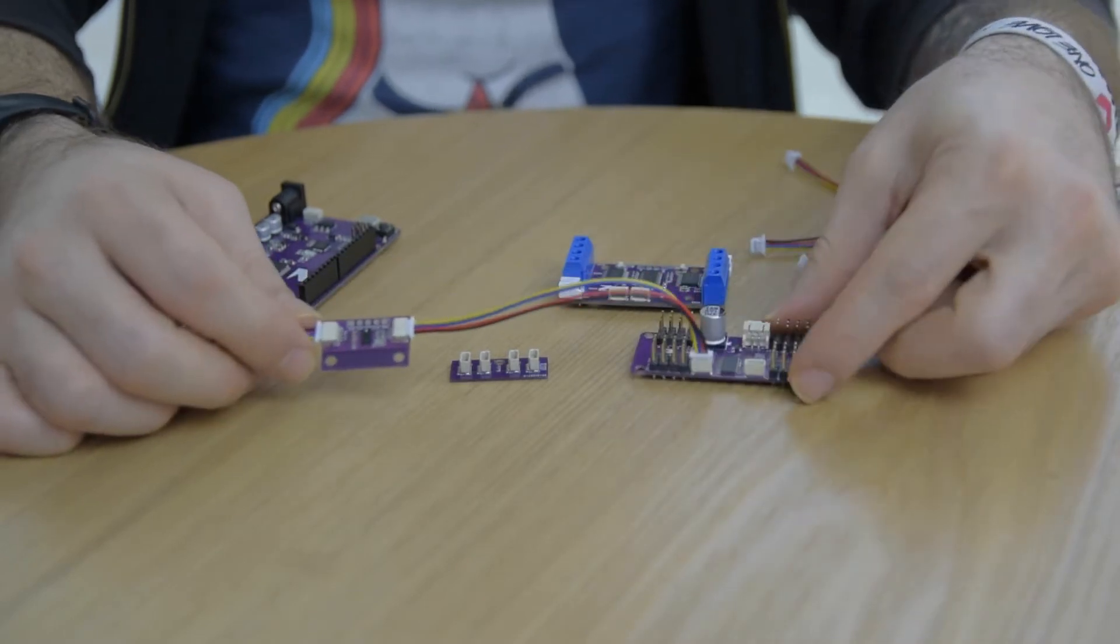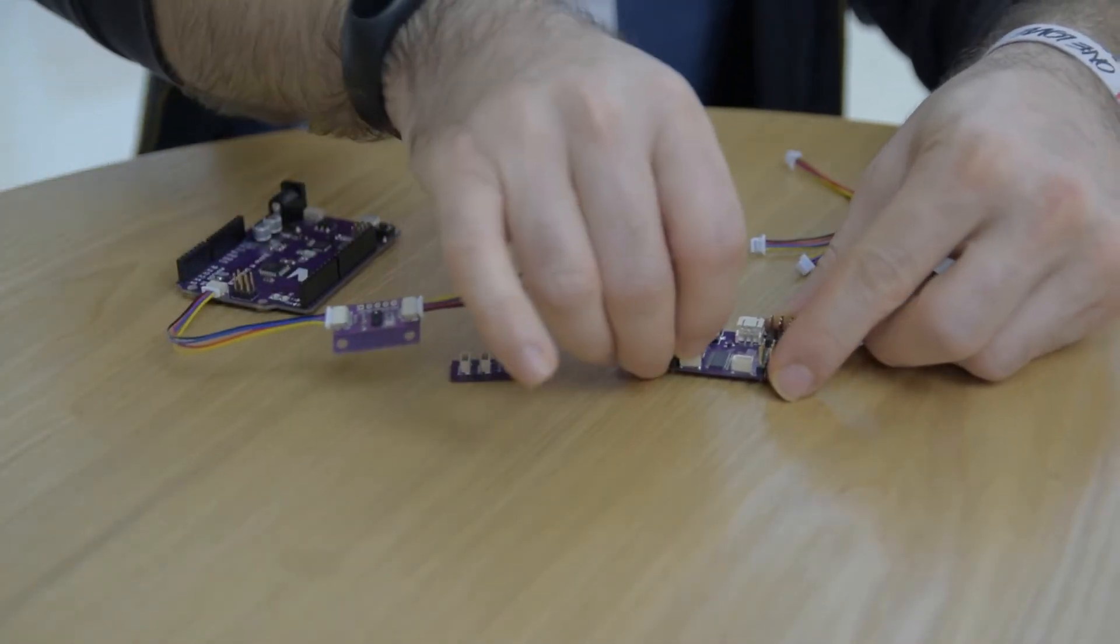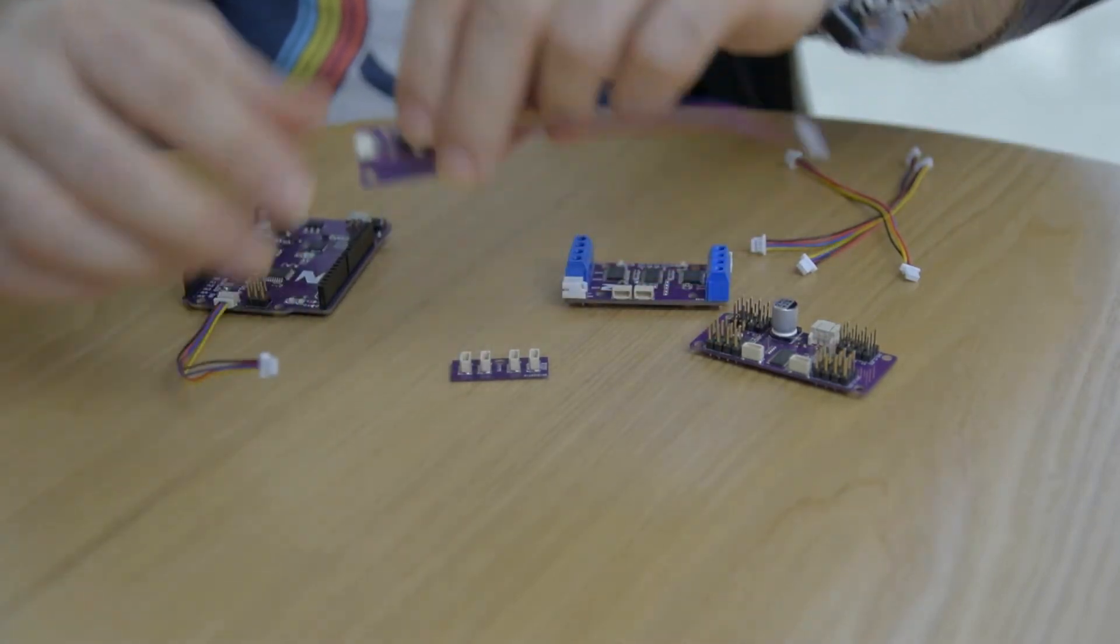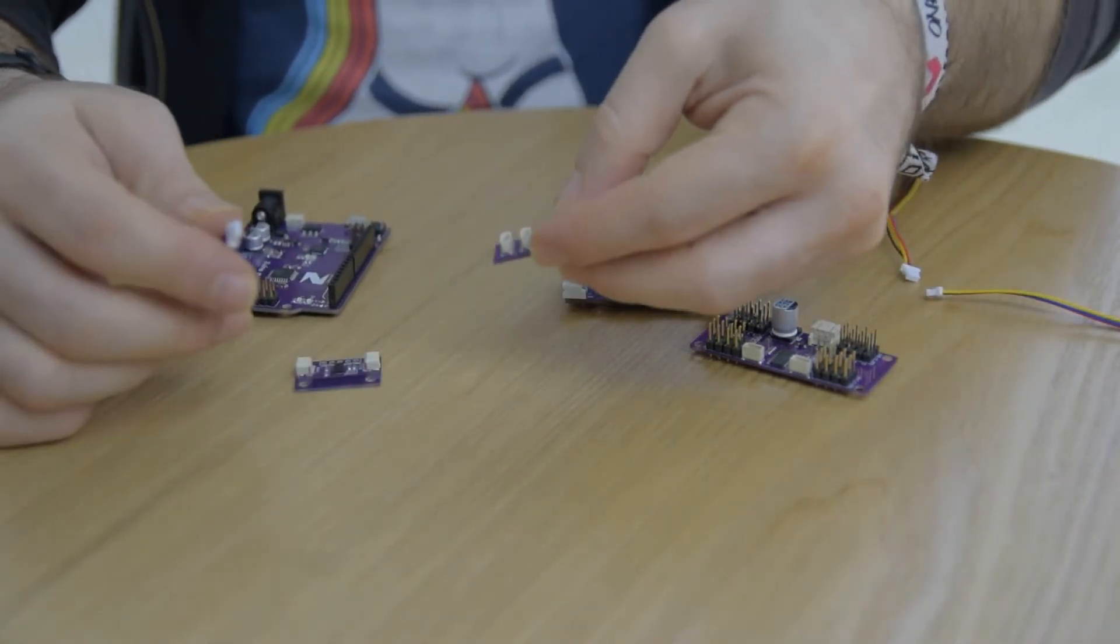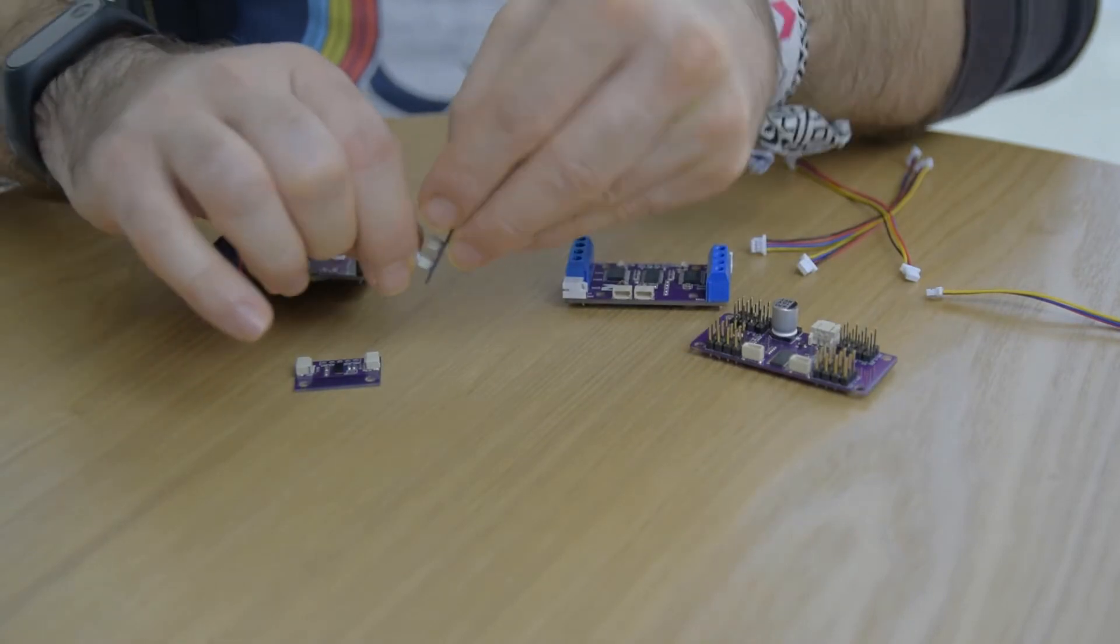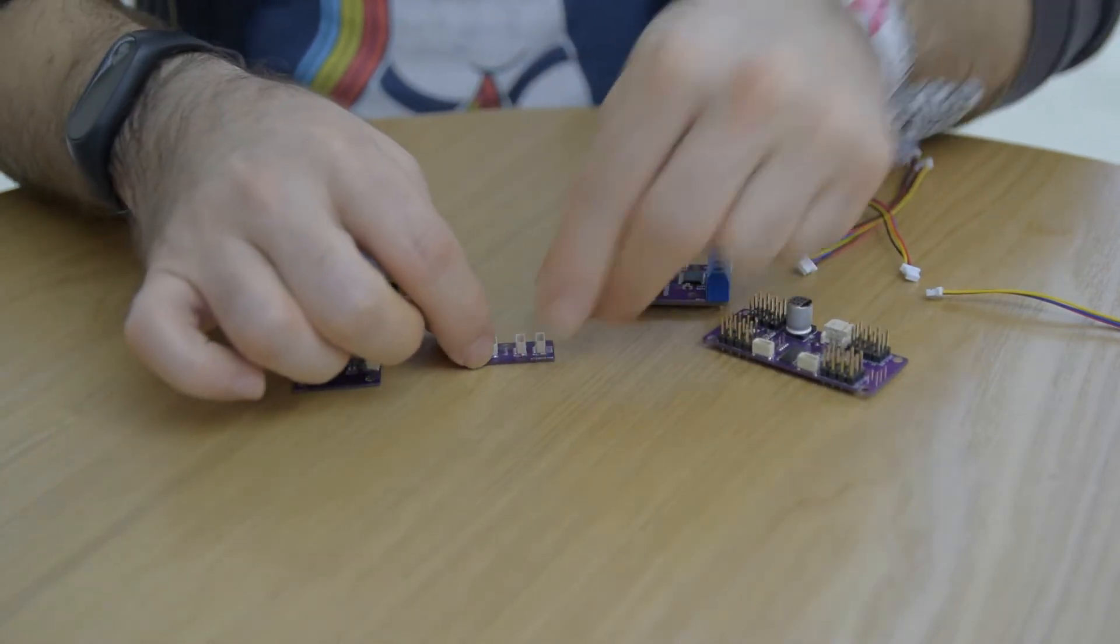Now if you don't want to daisy chain them together, you can also do a star topology using this hub adapter right here. So I'm just going to plug the Zuino in right there.